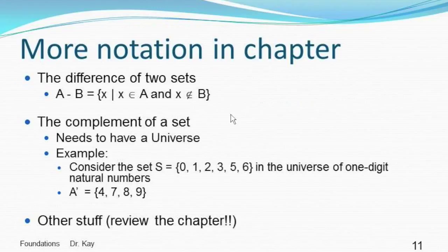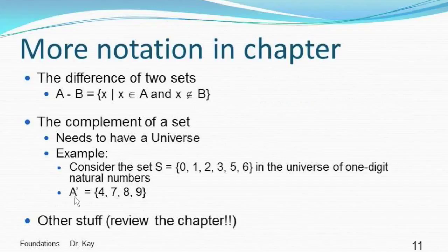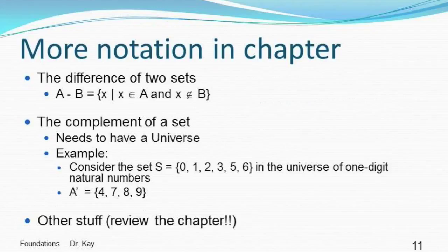We also have the complement of a set. When you talk about the complement, you need a universe — you need to define what world you're working in. The complement is everything not in the set. For example, if S has certain elements in the universe of all one-digit natural numbers, then the complement — written with a prime symbol as your book does — is all those one-digit natural numbers not in S. There's other material in this section you need to know, so review the chapter; this is just a quick review of the highlights.